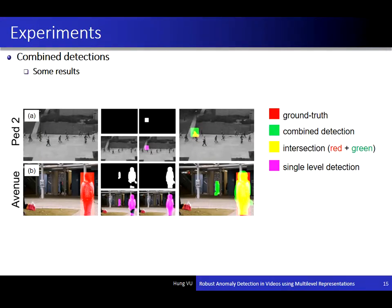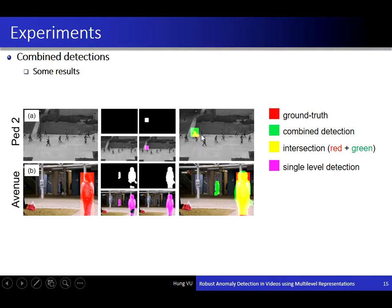Here are some examples of detection results provided by our video anomaly detection framework. In this figure, there is an anomaly object — a bicycle. The low-level detector cannot find it, but the high-level detector can localize it correctly, so we have a correct detection.